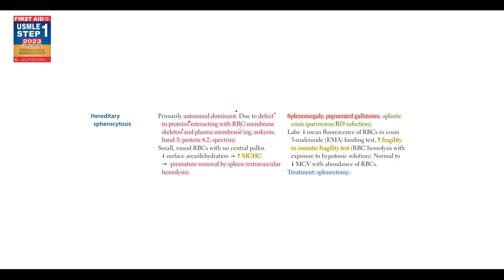Hereditary spherocytosis belongs to hemolytic anemias. This disorder is inherited by an autosomal dominant pattern, and the major feature of this disease is a defect in proteins that interact with the red blood cell membrane skeleton and plasma membrane. It can be a defect in ankyrin, band 3 protein, protein 4.2, or spectrin. This results in formation of small, round red blood cells with no central pallor and with decreased surface area — such cells we call spherocytes.